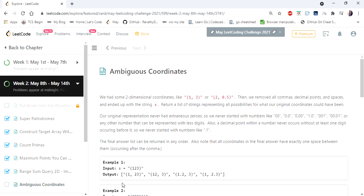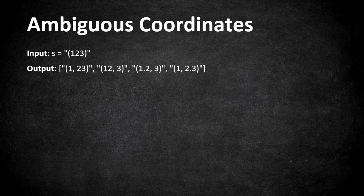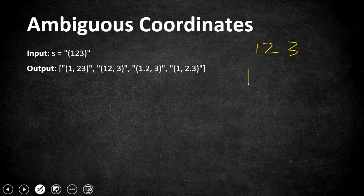The input given is a string which represents two-dimensional coordinates, and we have to return a list of strings with commas and decimal places. The given input string has no commas or decimal places, and we have to split it into two coordinates — two substrings. For example, '123' can be separated into '1' and '23', or '1', '2' and '3'. After splitting, we put them with decimal places and commas to form the two-dimensional coordinates.